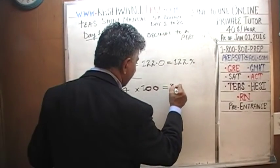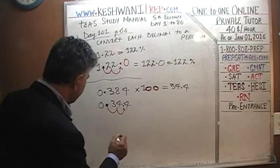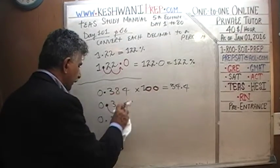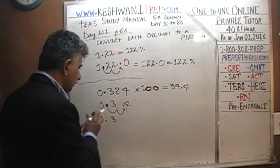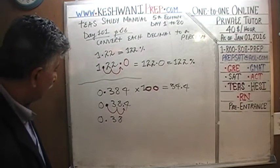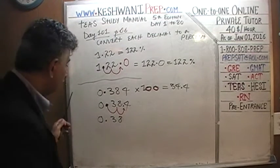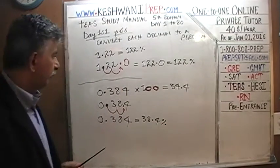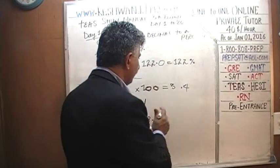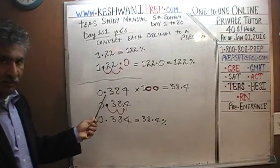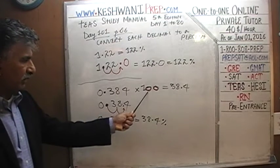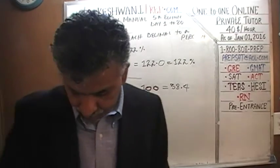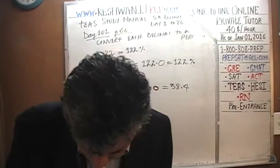So 0.384 times 100 gives us 38.4. Therefore, 0.384 when converted into percentage is 38.4 percent.